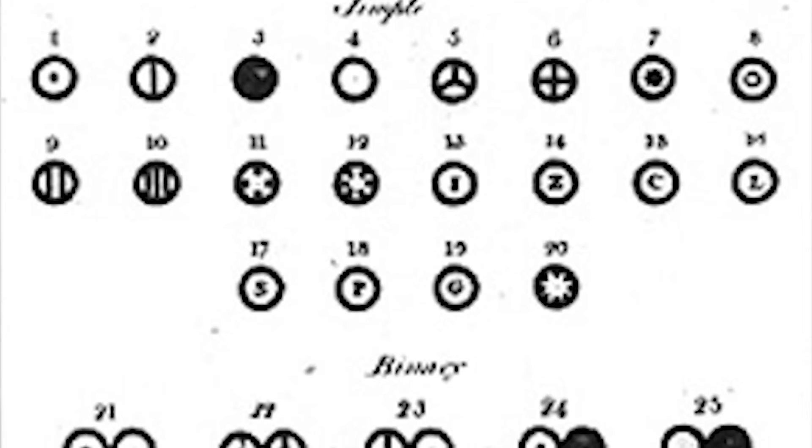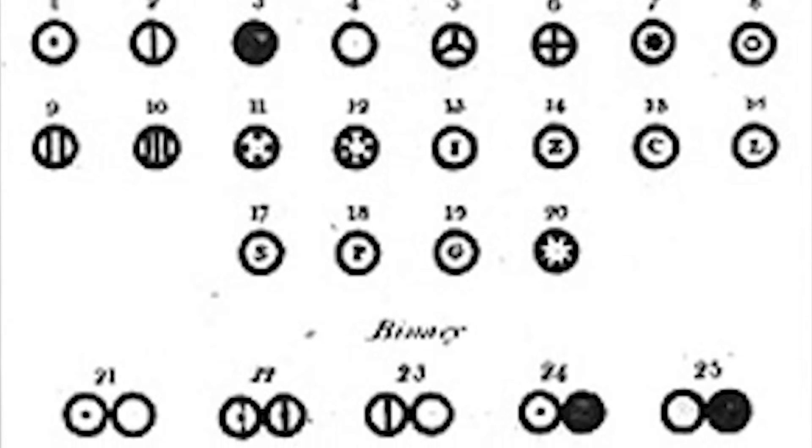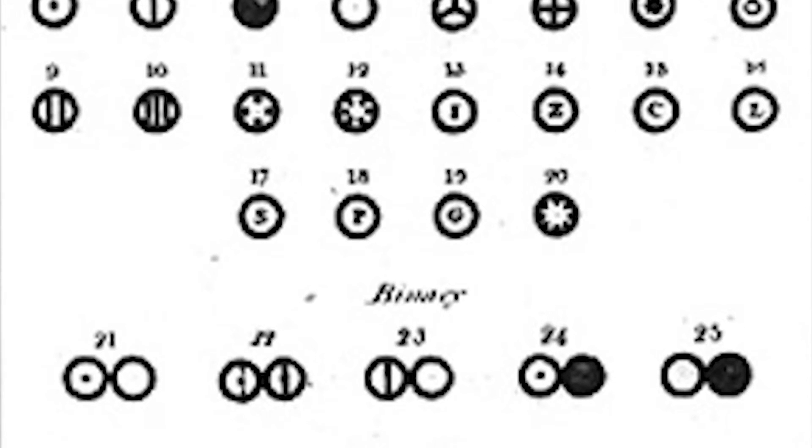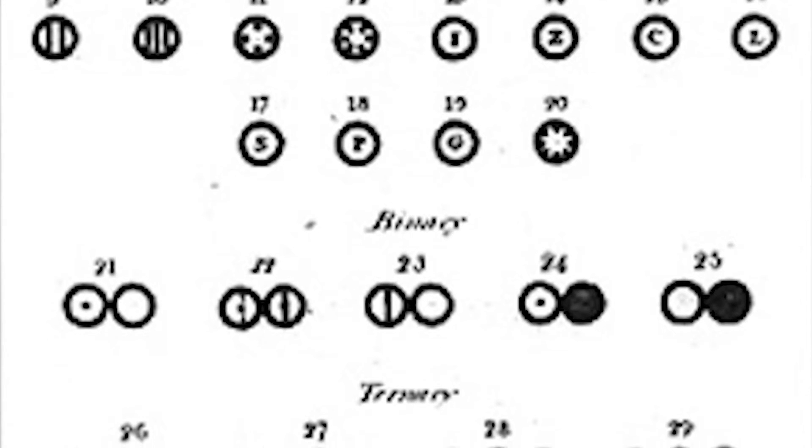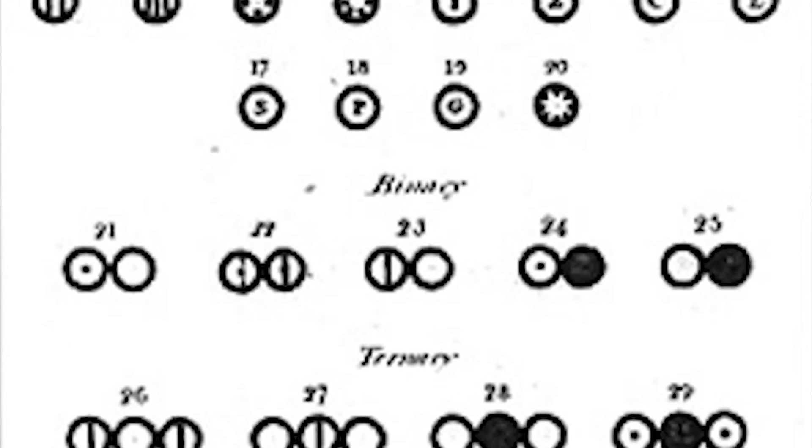Everything wasn't perfect, but it is the first real try of an atomic theory. And here we see some of his sketches. But he thought that the simplest compound between two elements is always one atom each, which is obviously not correct.